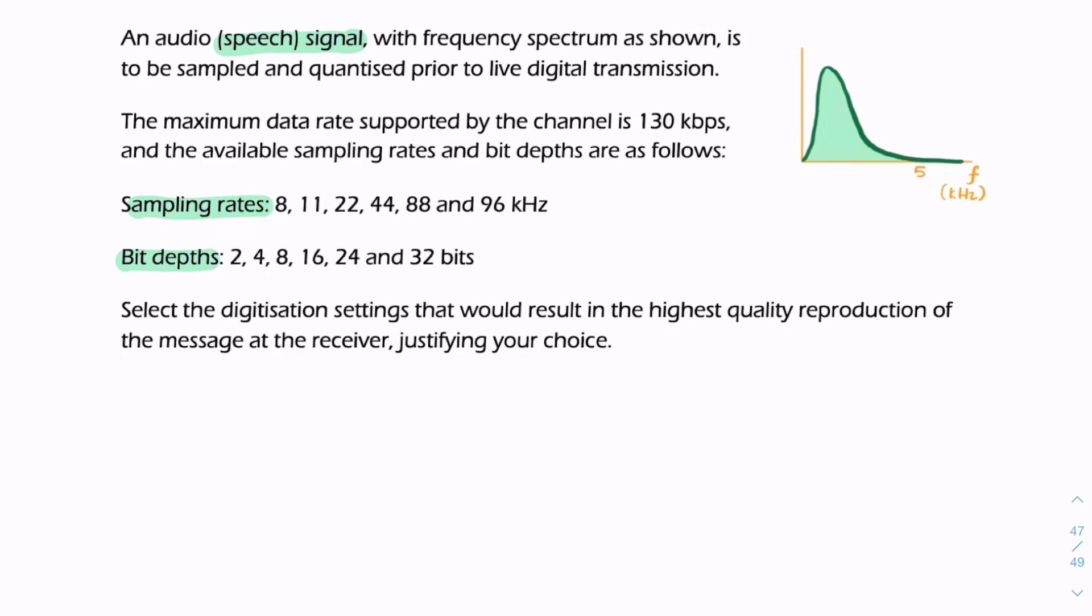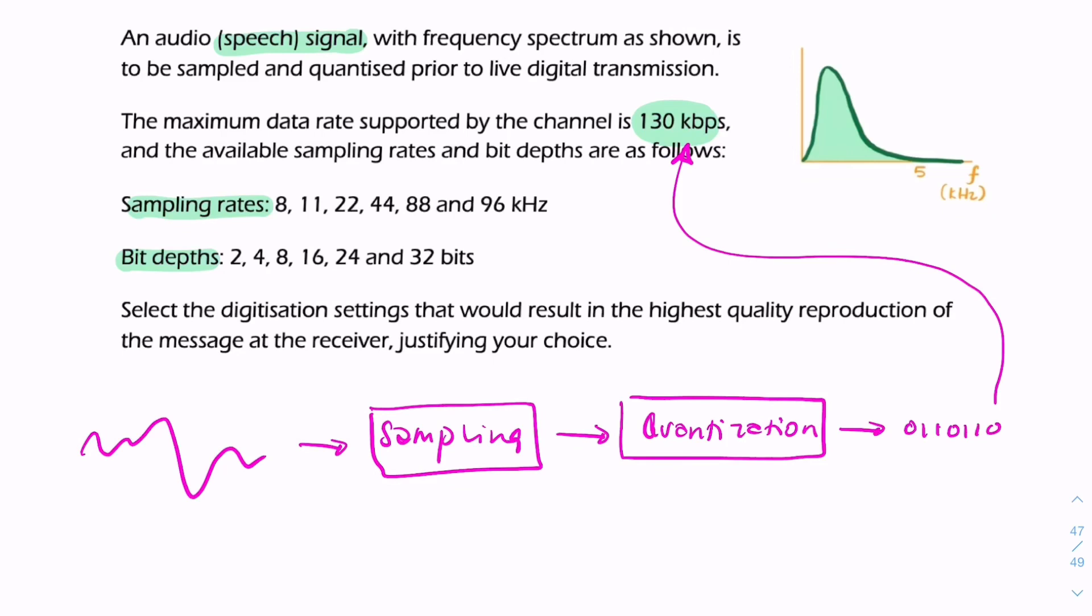We're given a range of possible values and we're told that there's a maximum bit rate supported by the channel of 130 kilobits per second. So you've got some kind of analog signal that's first going to be sampled and then converted to digital - that's our quantization. Here we'll end up with a bit stream, and we're told that there's a limit of 130,000 bits per second imposed by the channel.